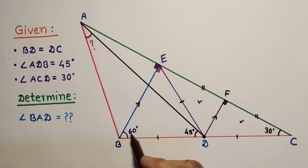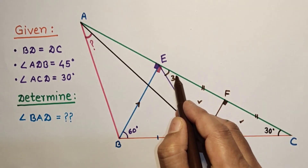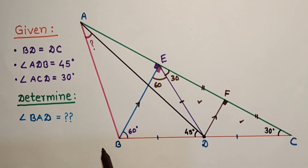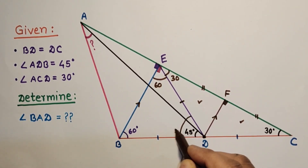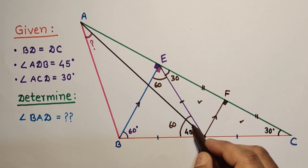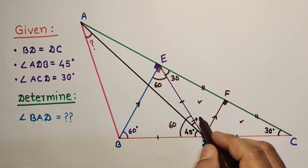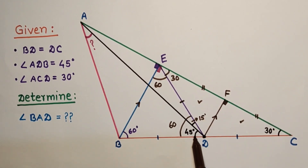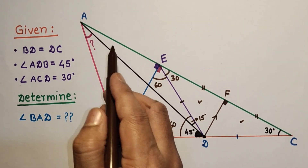Since DC equals DE, triangle DCE is isosceles. The angle at C is 30 degrees, so the angle at E (angle DEC) is also 30 degrees, making angle CDE equal to 60 degrees. Since DB equals DC equals DE, angle DBE equals 60 degrees, confirming triangle DBE is equilateral. The full angle ADB is 45 degrees and angle BDE is 60 degrees, so angle EDA equals 60 minus 45 equals 15 degrees. The exterior angle ADB (45 degrees) equals angle ACB (30 degrees) plus angle DAC, giving angle DAE as 15 degrees.